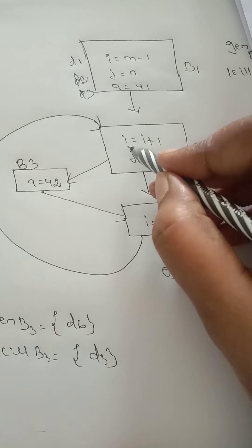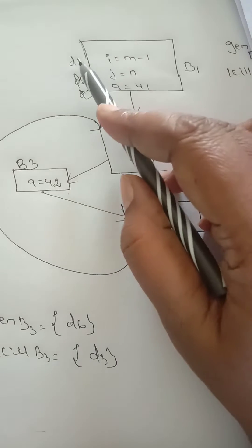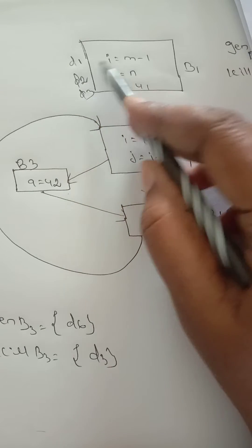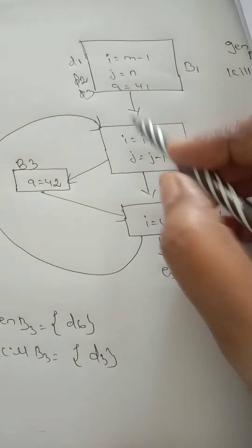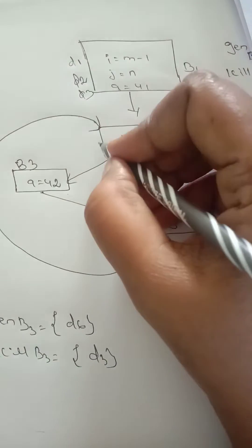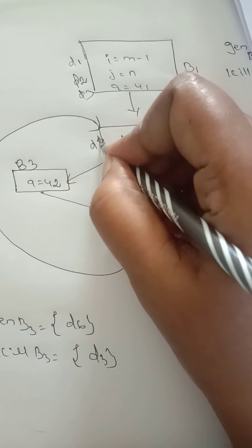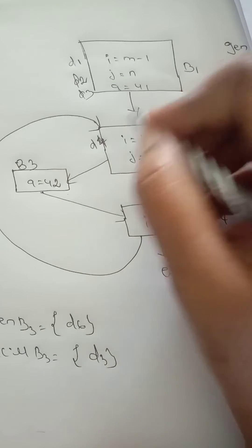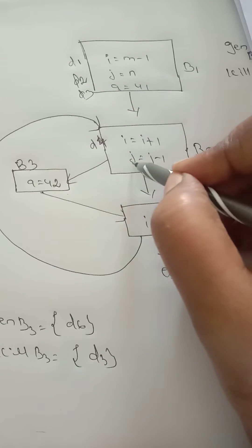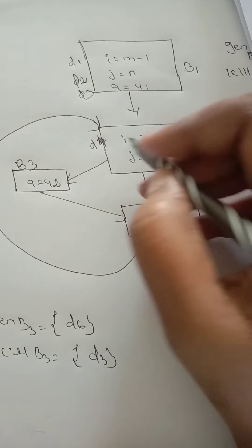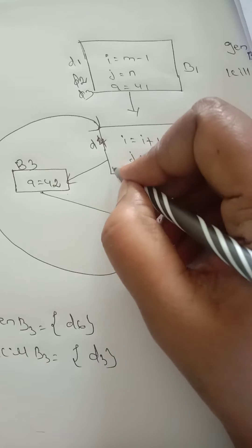The next statement in block one is j equal to n, and the output variable j is called data two (D2). Then the third statement is a equal to u1, so the output variable a is called data three (D3). Totally we have three data in block one. In block two, i equal to i plus one — the i is already stored as D1 — so incrementing i gives us data four (D4).